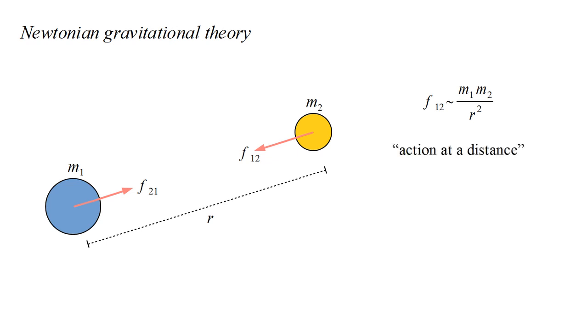This describes so-called action at a distance. The masses exert these forces without being in contact with each other. Indeed, without apparently being in contact with anything. So it's natural to ask, how is the force conveyed? What is the mechanism by which the masses pull on each other?